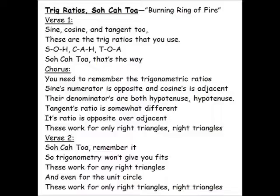You need to remember the trigonometric ratios. Sine's numerator is opposite, and cosine's is adjacent. Their denominators are both hypotenuse. Tangent's ratio is somewhat different — its ratio is opposite over adjacent.